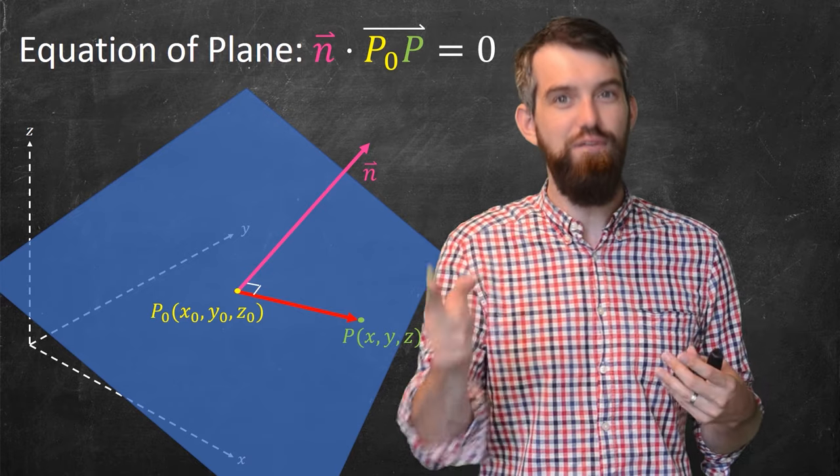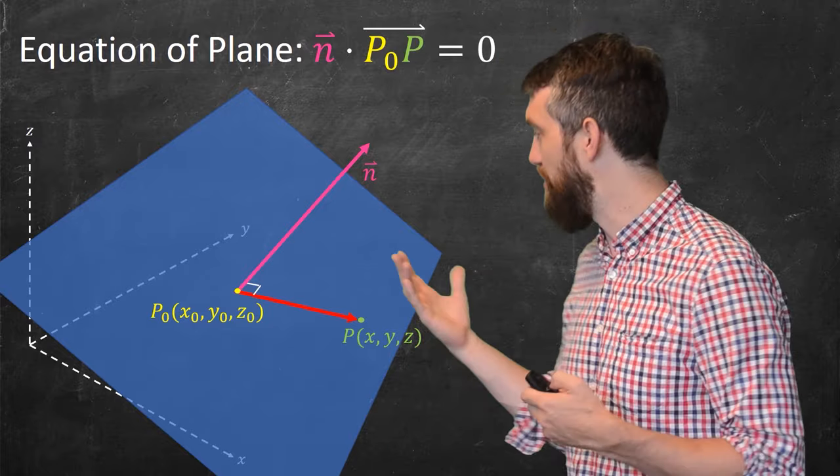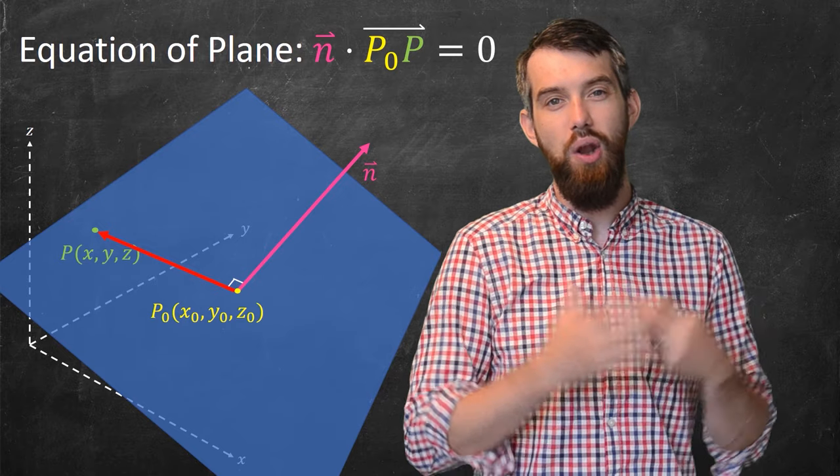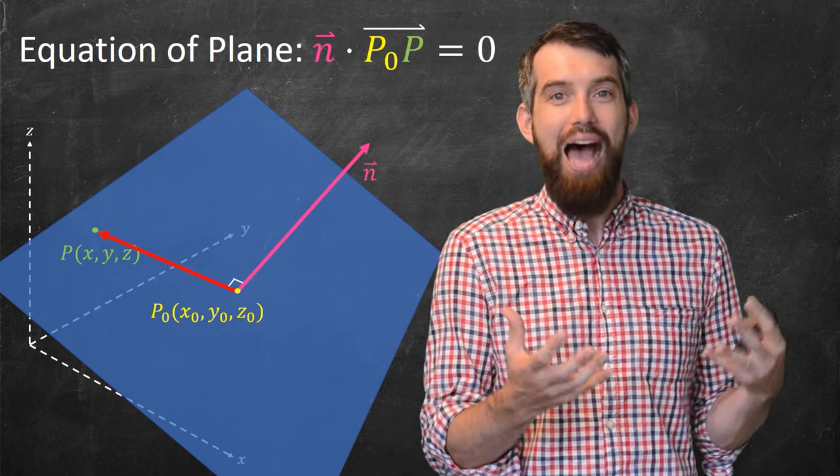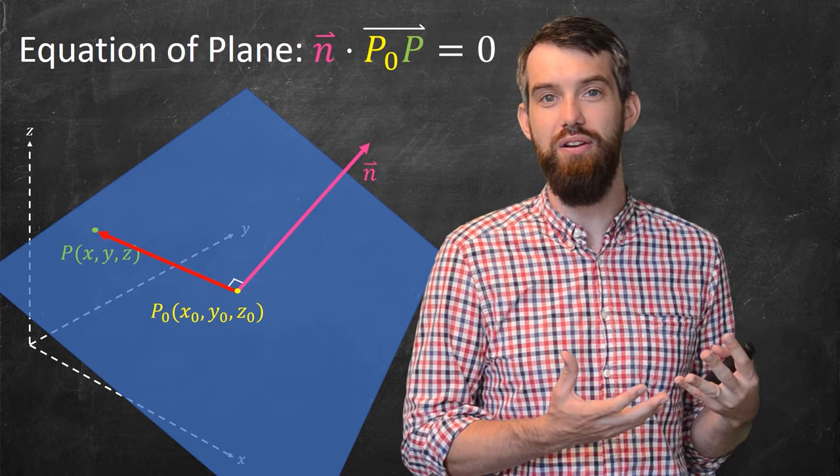And then if I leave my fixed point where it is, but I move where the P is, for example, if I consider this different location or this different location again, well, in all of these scenarios, you have this P₀ to P vector being orthogonal to the n vector.